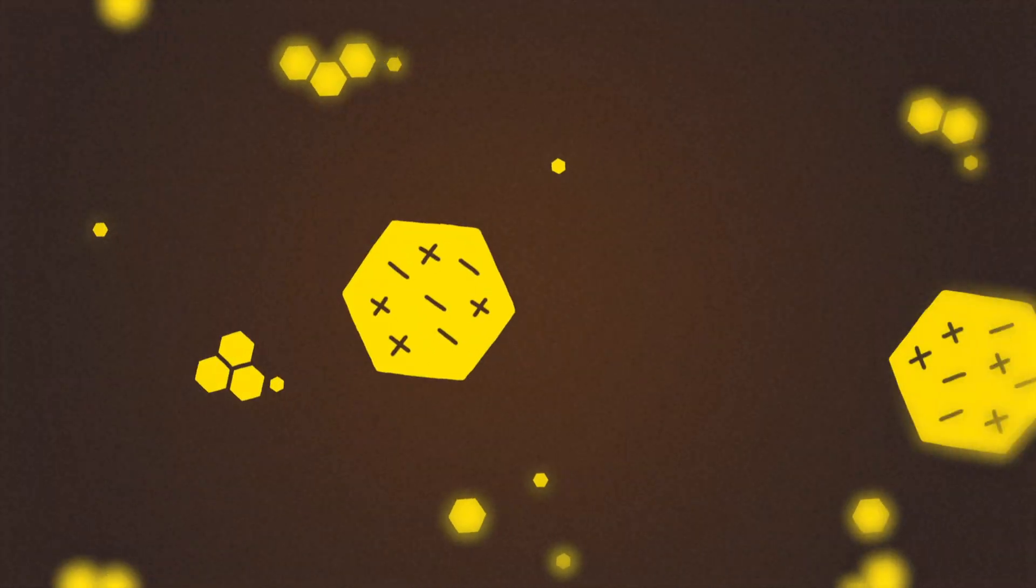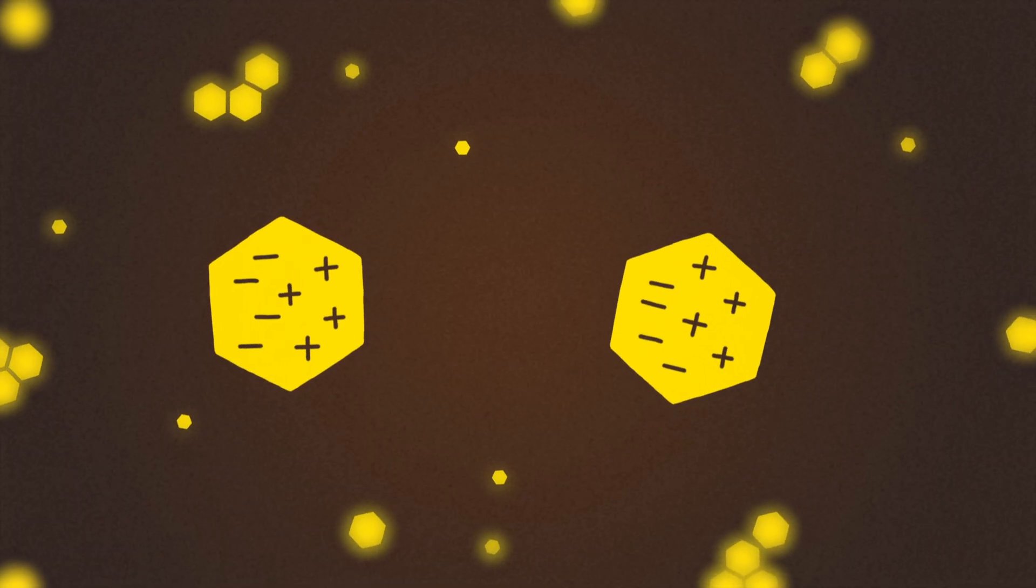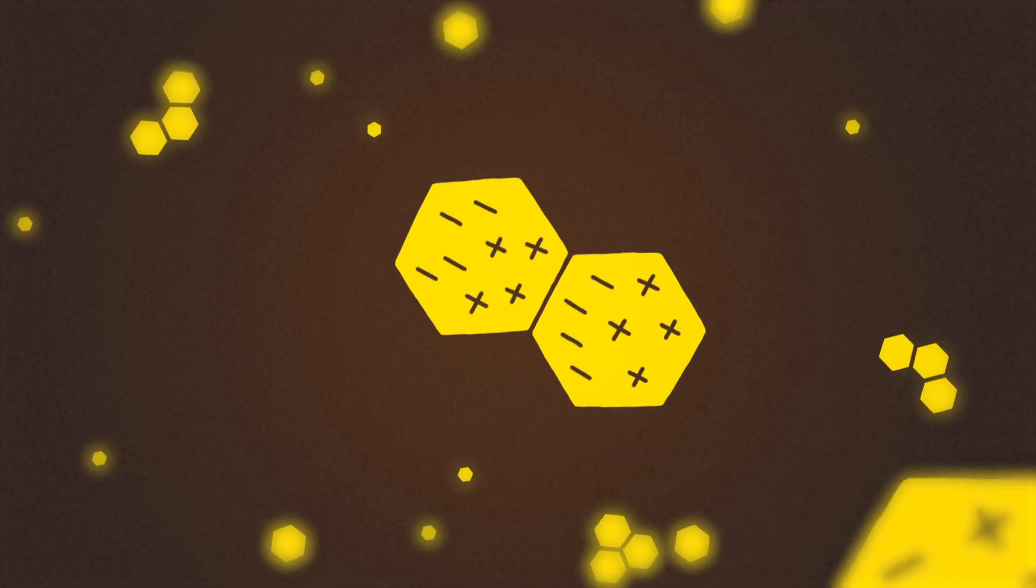That's where a cloud of electrons shifts to one side of a molecule, creating a negative charge on one end and a positive charge on the other. Opposites attract, but van der Waals can only hold tiny things together.